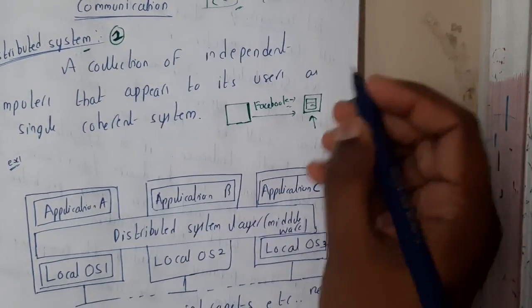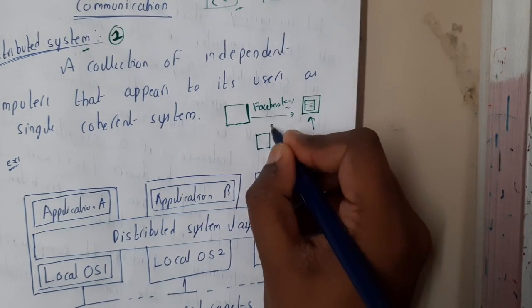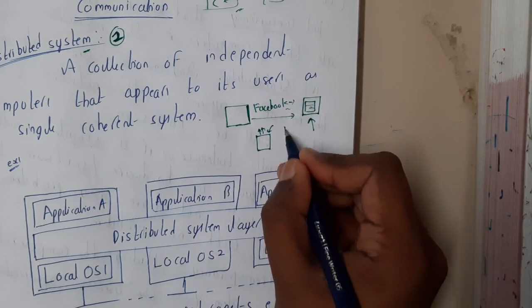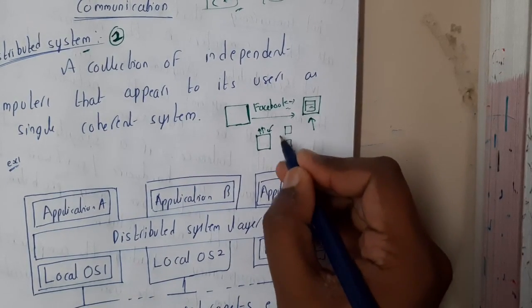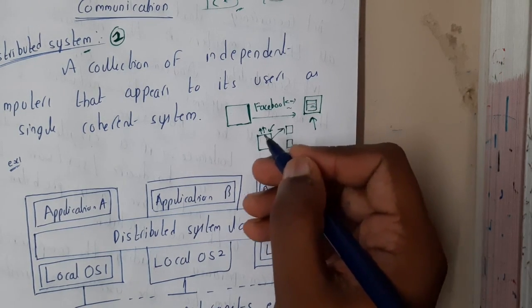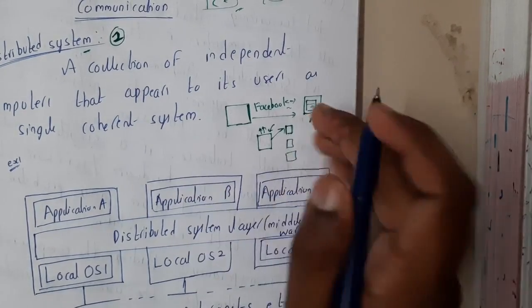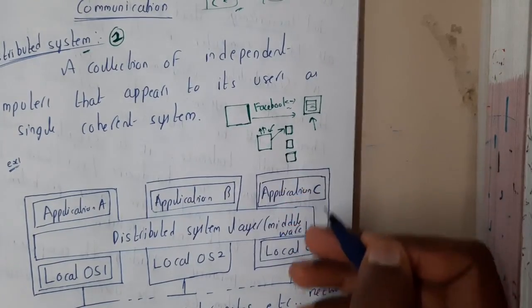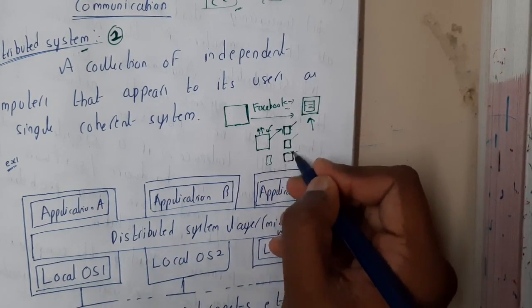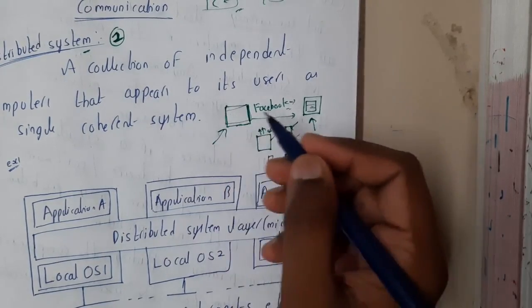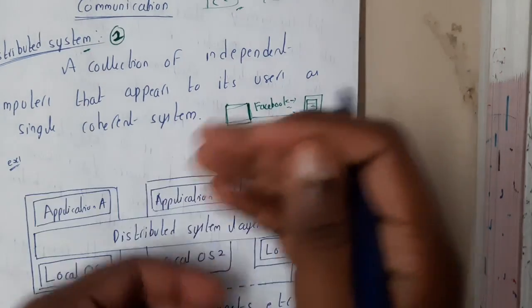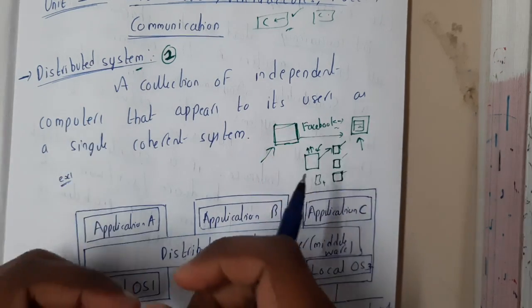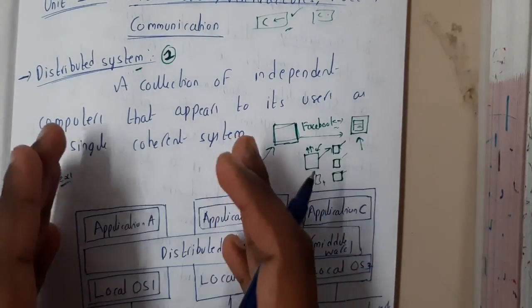Whenever a huge website is established, for requirements like speed, reliability, and scalability, instead of storing all data in a single server, they divide it into multiple servers. For example, one server might be just for streaming, one for posts and shares, one for logins and logouts, and one could be the database. When you visit the website, it looks like a single server is responding — that fast and seamless interaction between multiple servers is what forms a distributed system.